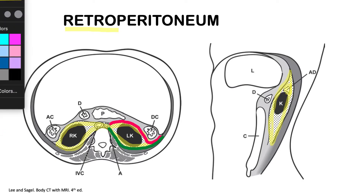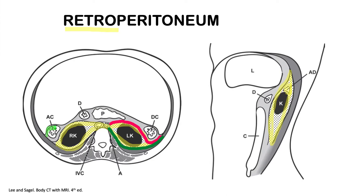Another space is found anterior to the perirenal space, and we call that the anterior pararenal space. You can see here that it contains the descending colon, the pancreas, the duodenum, and the ascending colon.